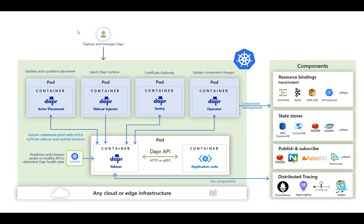One important thing to note: the health APIs are not specific to Kubernetes. If you're running Dapr on Docker Swarm, for example, you would configure Swarm to do health checks on the API endpoint Dapr exposes. In Kubernetes, the sidecar injector configures Kubernetes to use that endpoint as its readiness and liveness checks.